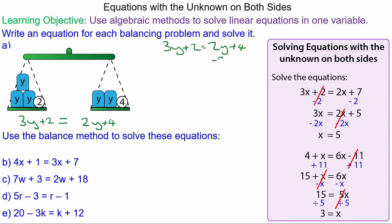By first of all taking 2y from each side, and by doing it to each side it becomes balanced, and 2y take away 2y is 0. So 3y take away 2y is y plus 2 equals 4, and take away 2 from both sides.